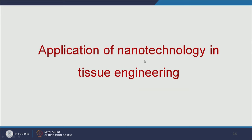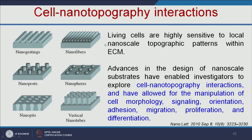Now let us see the applications of nanotechnology in tissue engineering. Using nanotechnology, we can make several nanostructures: nanogratings, nanofibers, and nanopits. Living cells are highly sensitive to local nanoscale topographic patterns within the extracellular matrix. Cell-nanotopography interactions determine cell morphology and can induce differentiation. Nanogratings and nanofibers can also induce cellular differentiation and cellular signaling.